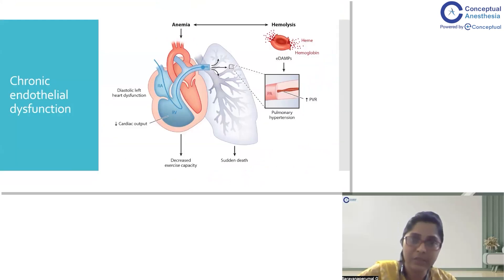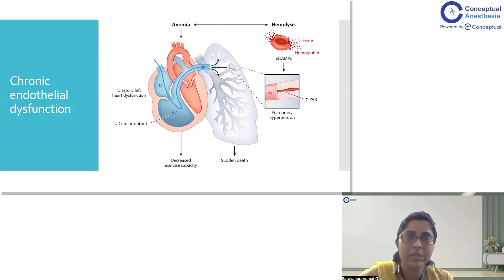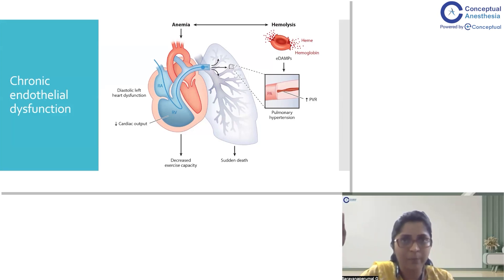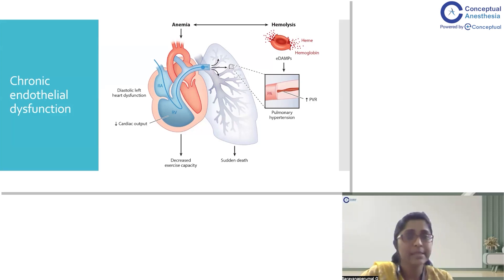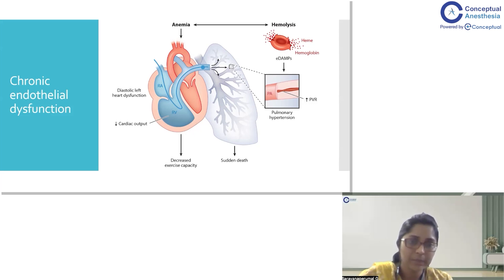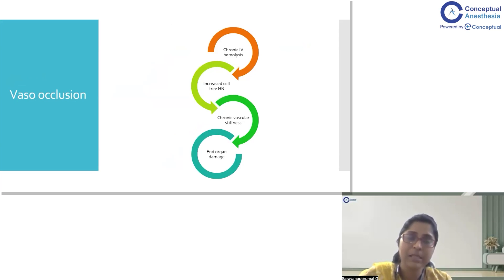This chronic endothelial dysfunction impacts every organ. In the heart, occlusion of small pulmonary vessels creates back pressure on the right ventricle. Over time, pulmonary hypertension develops, leading to right heart failure and pulmonary artery hypertension. The left heart, dealing with chronic anemia, increases cardiac output by overworking the left ventricle, eventually leading to systolic or diastolic failure. This vaso-occlusive process is characterized by chronic intravascular hemolysis, increased cell-free hemoglobin, chronic vascular stiffness, and end organ damage.